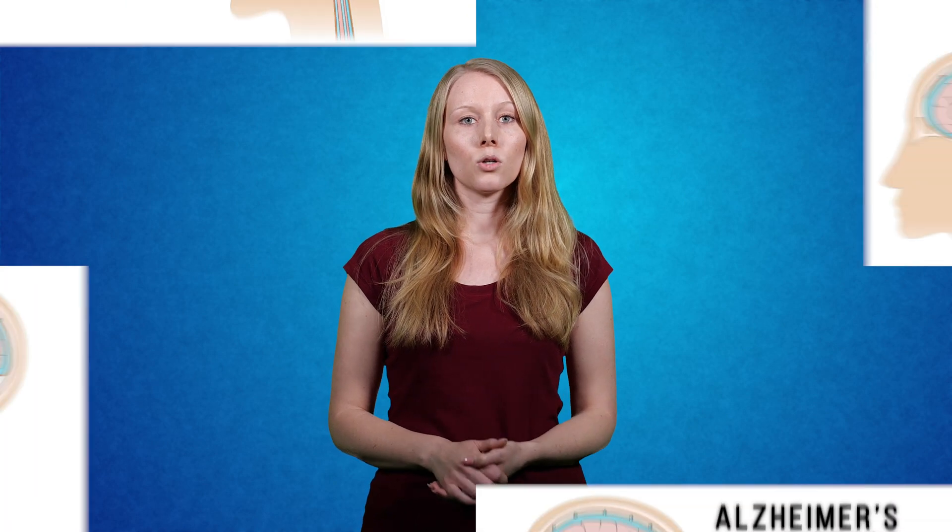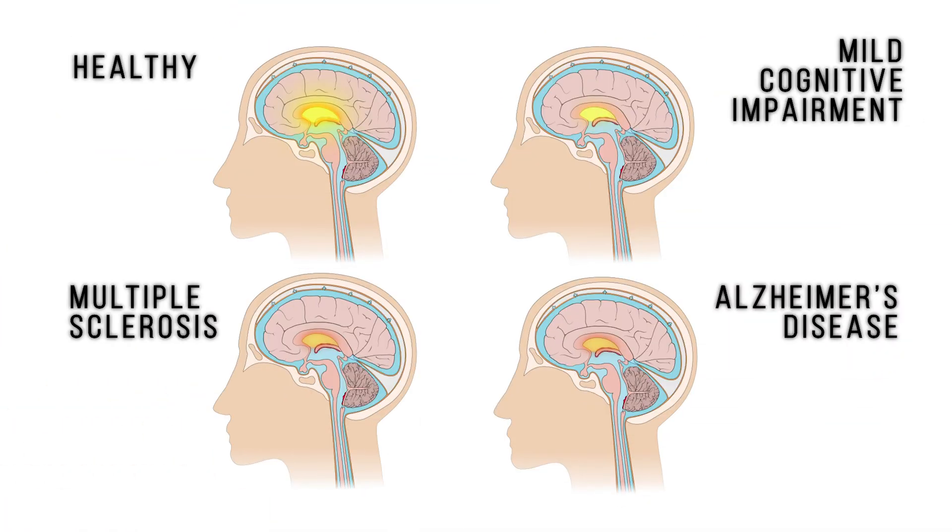We found that the lateral ventricle signal was significantly lower in Alzheimer's disease and in multiple sclerosis groups compared to healthy controls. The mild cognitive impairment group had intermediate lateral ventricle signal values between those of Alzheimer's disease and healthy control groups.